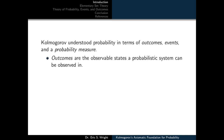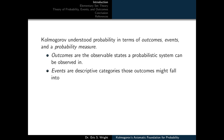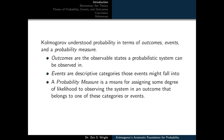Kolmogorov understood probability in terms of outcomes, events, and a probability measure. Outcomes are the observable states a probabilistic system can be observed in. Events are descriptive categories those outcomes might fall into. A probability measure is a means for assigning some degree of likelihood to observing the system in an outcome that belongs to one of these categories or events. We'll initially explore these concepts through some examples.